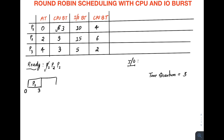We also need to keep track of the I/O here. P2 gets the CPU and can run for at most three time quantums, so P2 runs from 3 to 6. Before time 6, P3 would also have entered the ready queue.